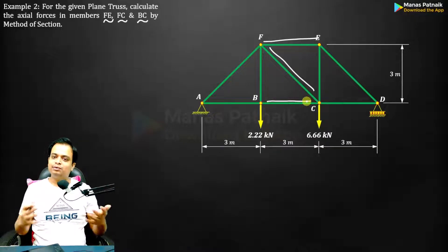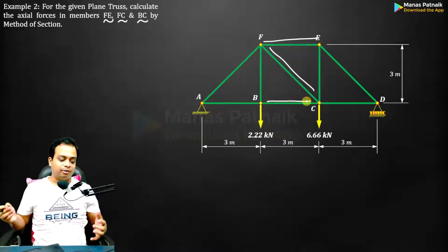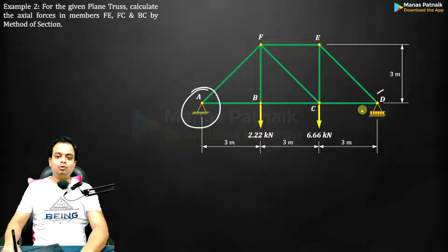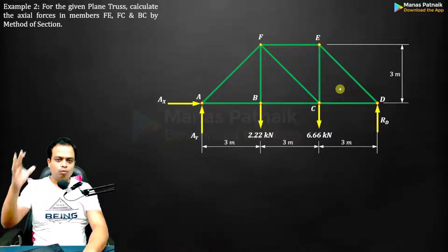How to do that? We'll use the method of sections. But the initial SOP is absolutely the same, right? So we are going to replace these supports with appropriate reactions. And here we go. Done.